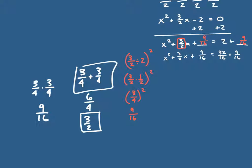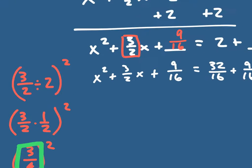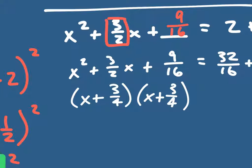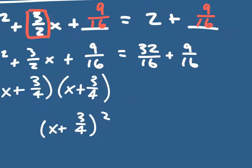So what two numbers multiply to nine-sixteenths and add to three-halves? That number is three-fourths. Every time I divide by 2, three-fourths is right there. Because this is a perfect square trinomial, it factors to x plus three-fourths times x plus three-fourths, which becomes x plus three-fourths quantity squared. On the right side, 32 plus 9 is 41 over 16.